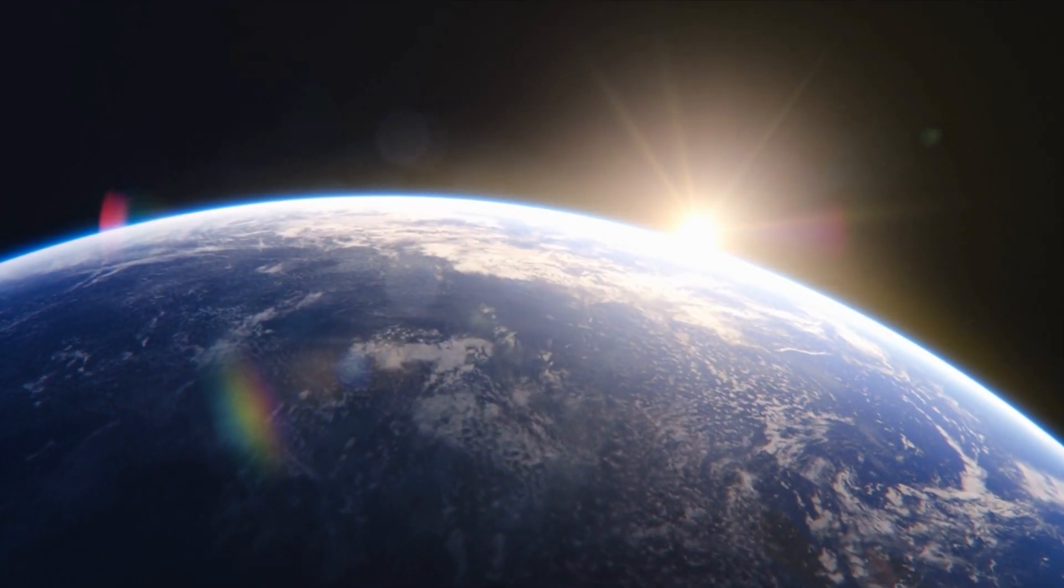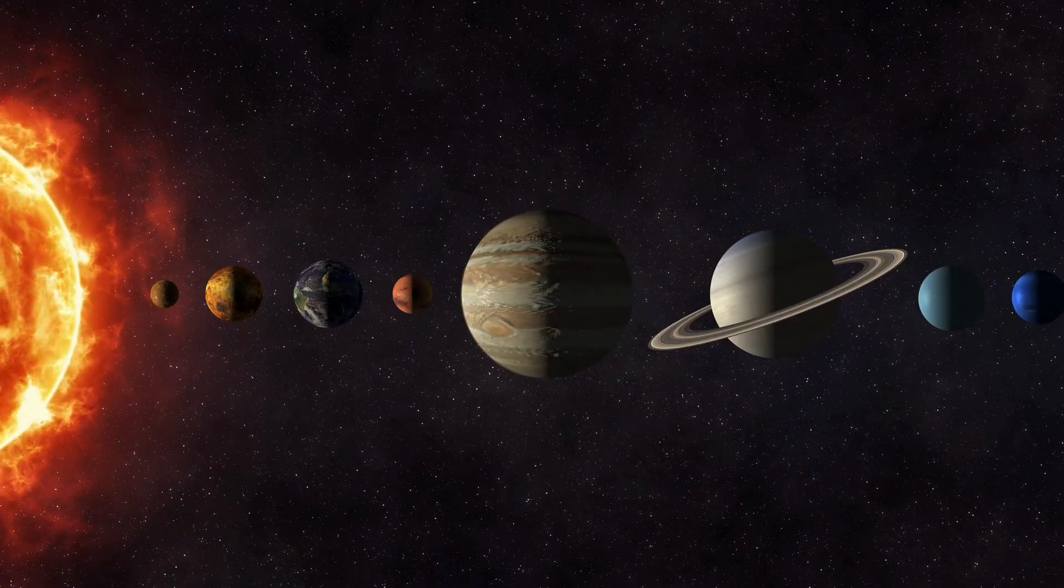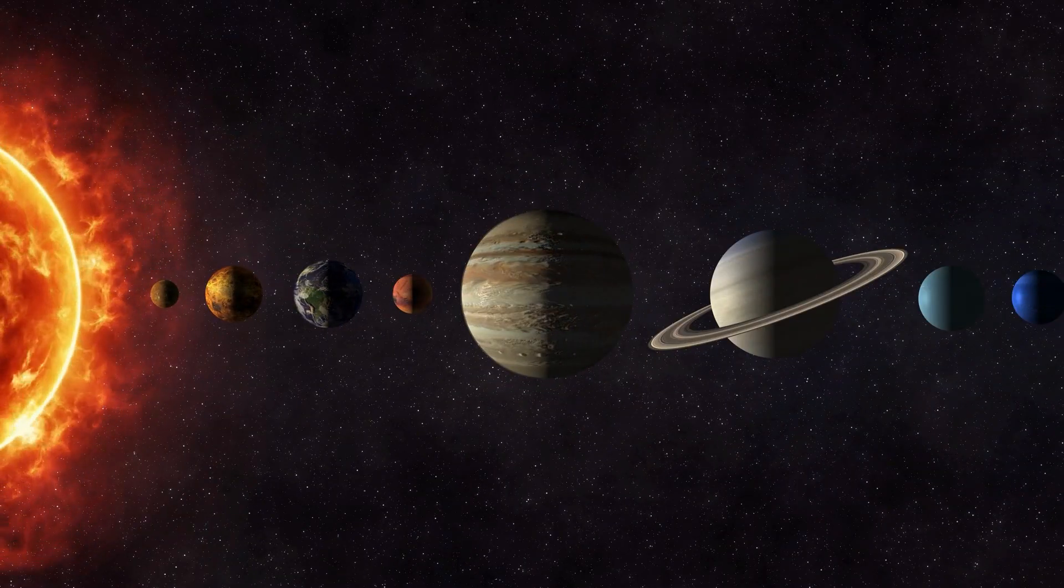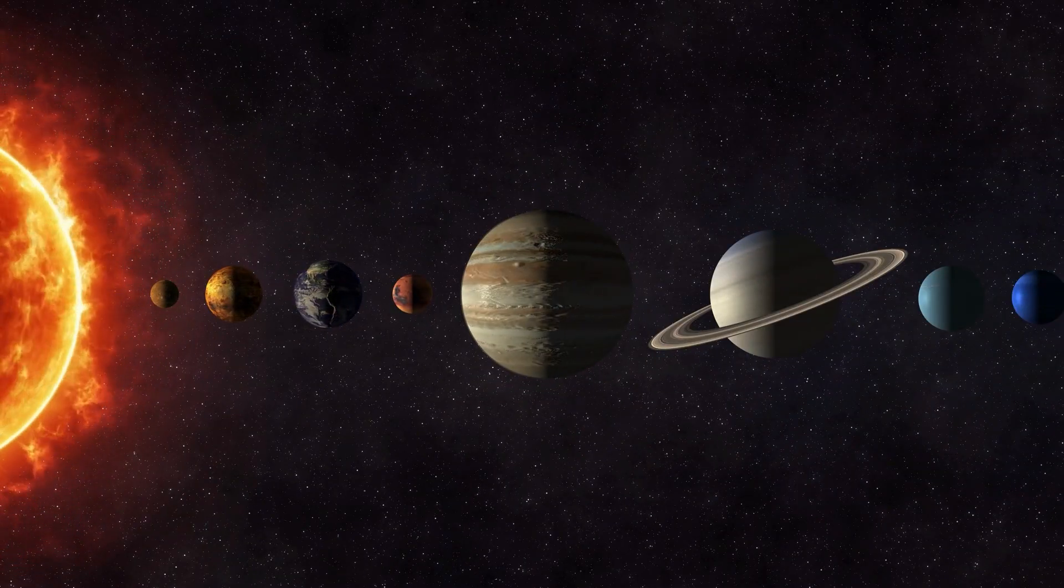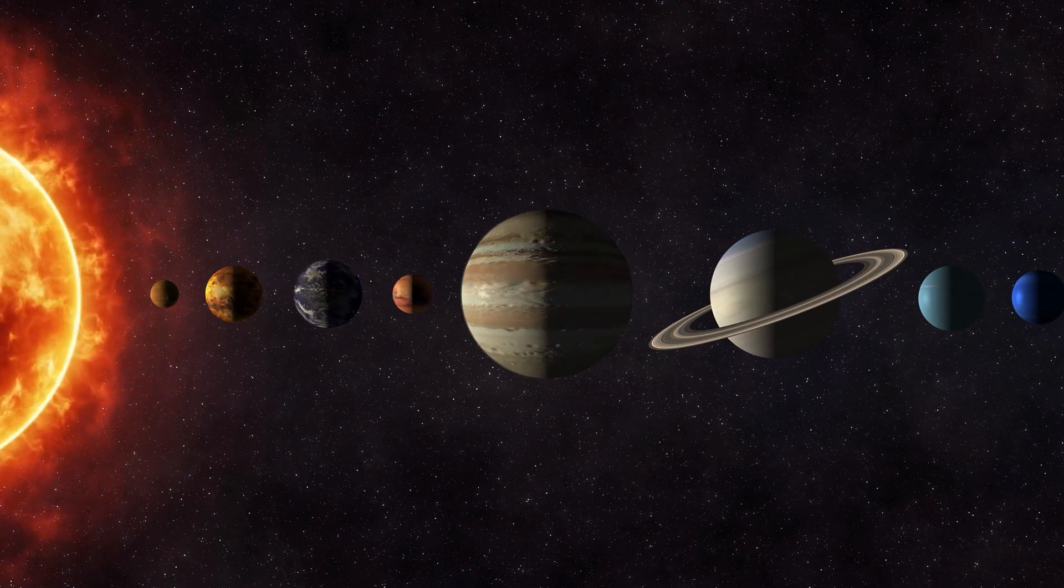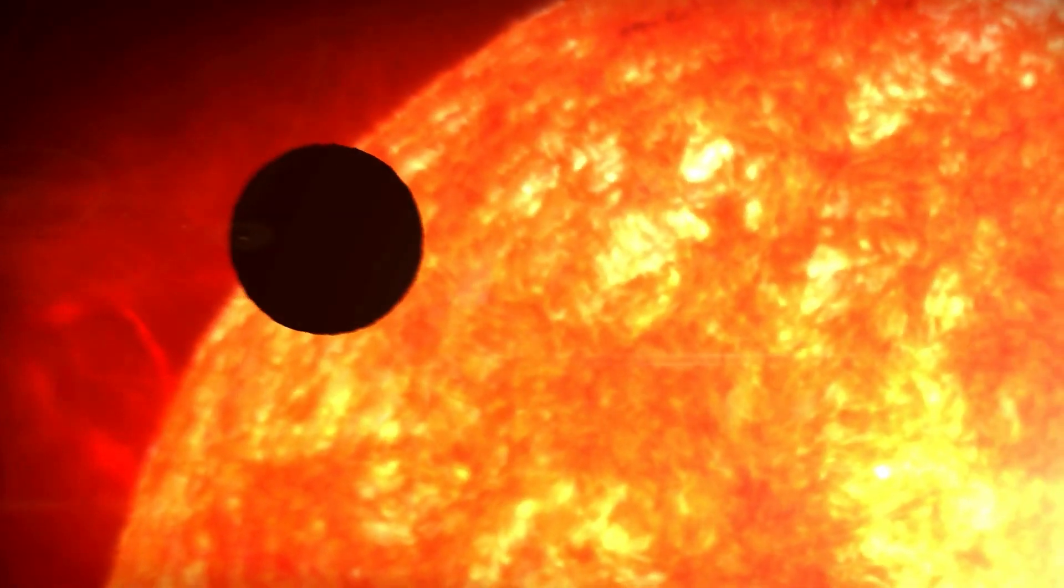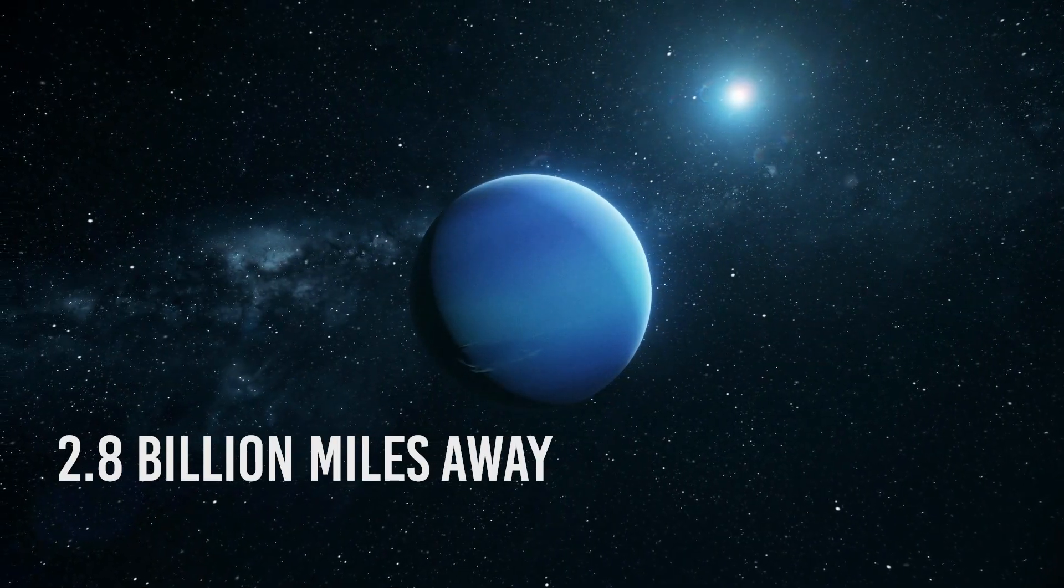It is about 93 million miles away from Earth. If we wanted to sort all the planets from the closest to the furthest, we would come up with this list. Mercury, Venus, Earth, Mars, Jupiter, Saturn, Uranus, and Neptune, with Mercury being 35 million miles away from the Sun and Neptune lying 2.8 billion miles away from it.